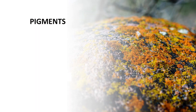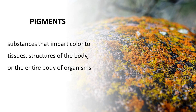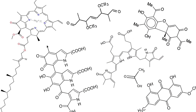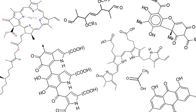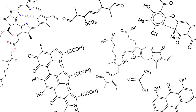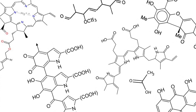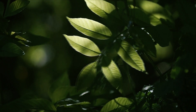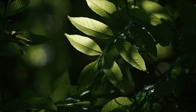The most important thing is that the colors we perceive are given by pigments. In biology, pigments are substances that impart color to tissues, structure of the body, or the entire body of organisms. These pigments are compounds with diverse chemical structures that can absorb certain wavelengths of light while reflecting or transmitting others. This process results in the appearance of specific colors.